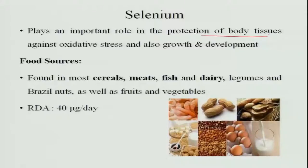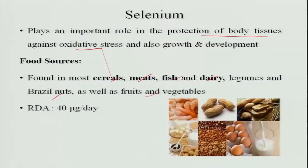The next mineral is selenium, a very important mineral that acts as an antioxidant. It plays an important role in protecting body tissues against oxidative stress and therefore supports growth and development. Food sources of selenium include cereals, meat, fish, dairy products, Brazil nuts, legumes, and fruits and vegetables. The requirement is very low — only 40 micrograms per day.